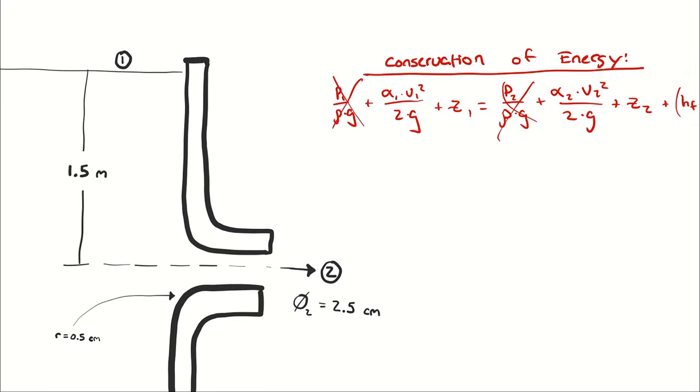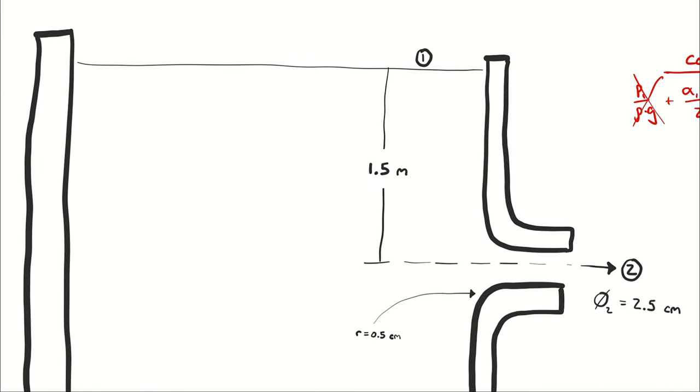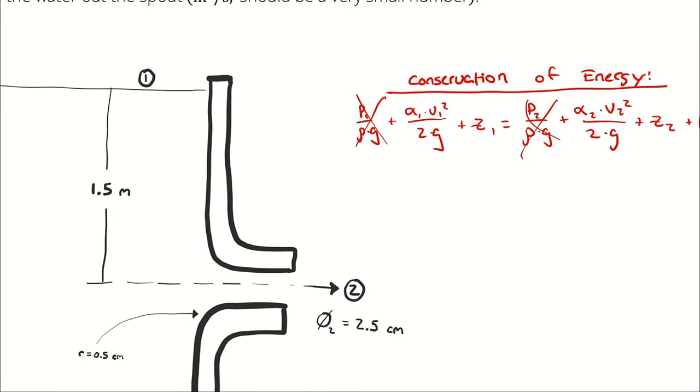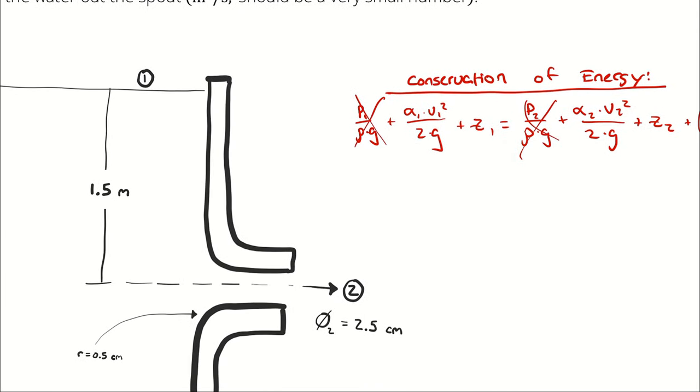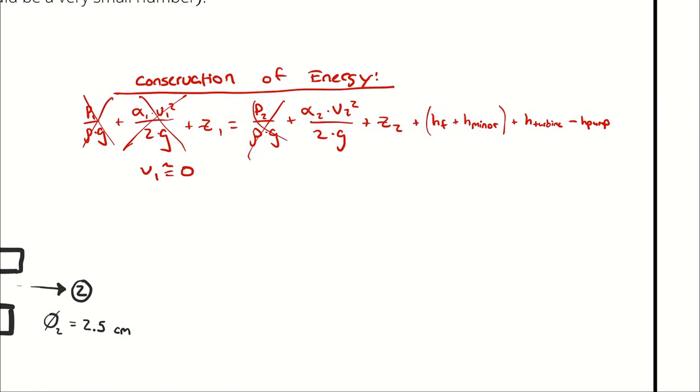Next, I'm going to be assuming that the cross-sectional area at state 1 is very large relative to state 2. If the cross-sectional area at state 1 is very large, that means for the same mass flow rate, the velocity will be relatively small. When we consider the effect of squaring that small velocity, we can say v1 is approximately zero. We can't neglect the changes in potential energy, as that is what is actually driving our flow rate. I can get rid of the turbine and pump head.